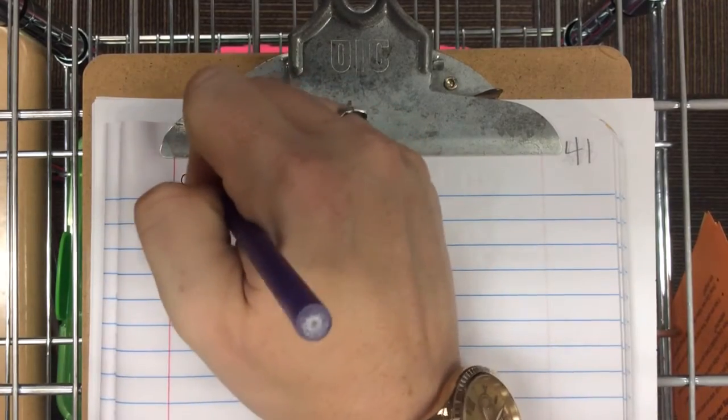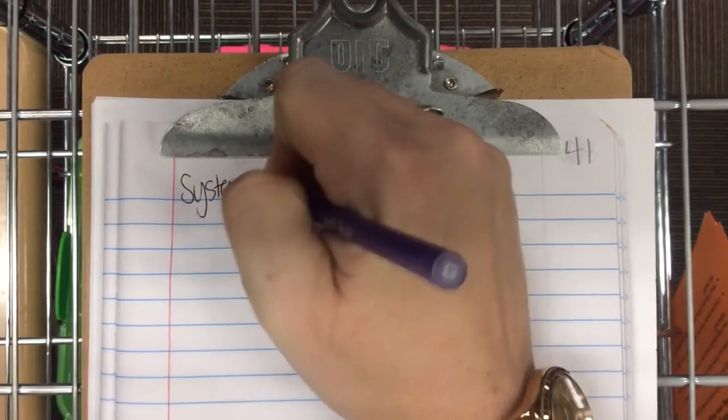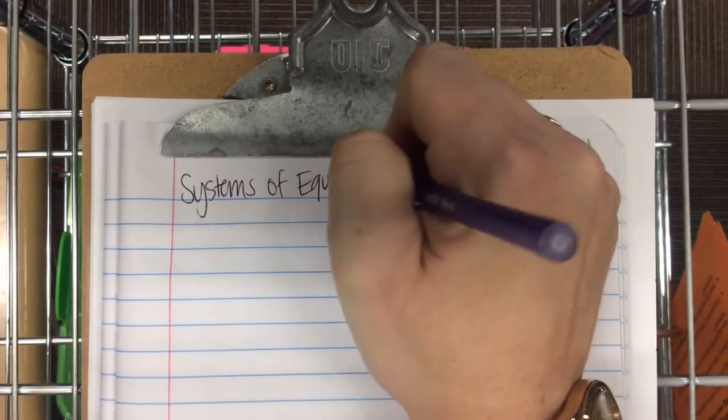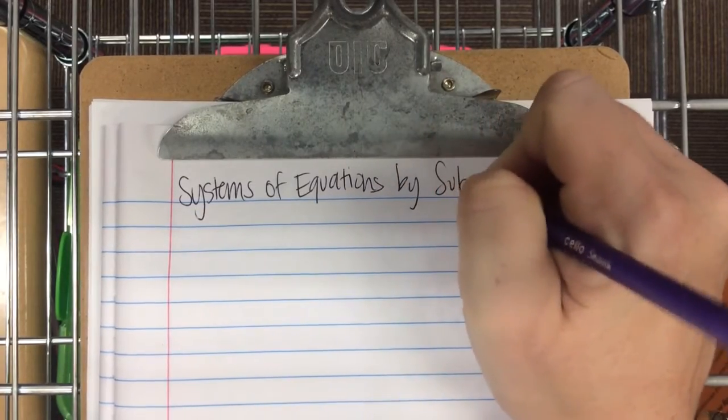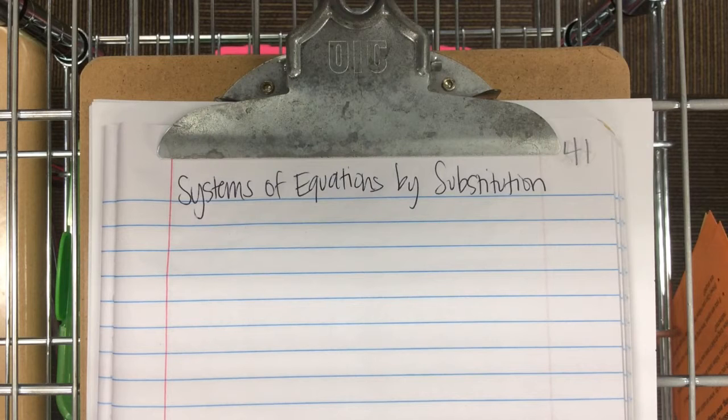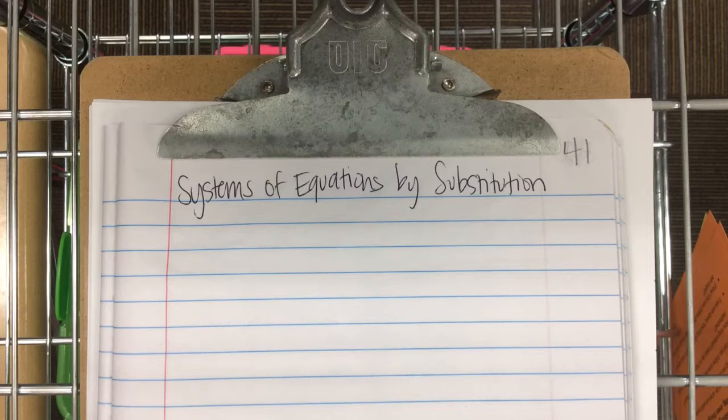So, systems of equations by substitution. And again, substitution is a secondary way of solving. It's still a system, so there's still two linear equations. Your answer is still going to be an ordered pair, an x value, comma, y value. But instead of graphing it, you're going to use substitution.